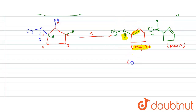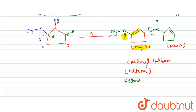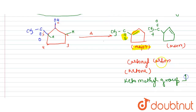In the major product, the carbonyl carbon present is a ketone group. There is also presence of a ketomethyl group — that is, a CH3 group adjacent to a ketone. The ketomethyl group (CH3–C=O) is clearly present in this major product compound.